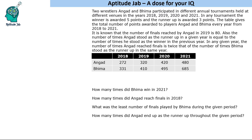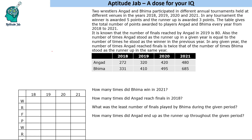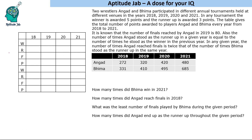We will set up a table for both persons — Angad and Bhim — showing the number of times each was winner and runner-up. Winner plus runner-up equals total finals, and from that we calculate points scored in each year. We are given that the number of finals reached by Angad in 2019 is 80.